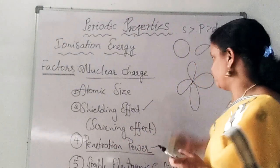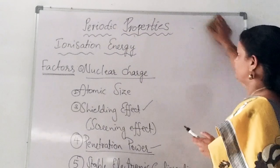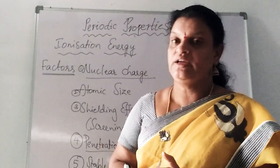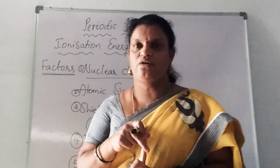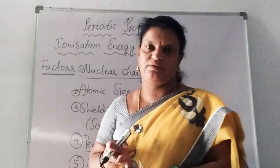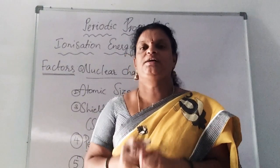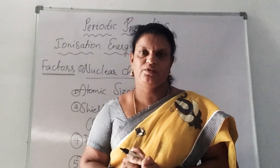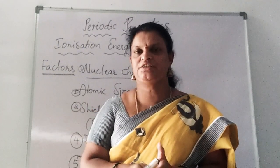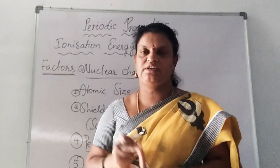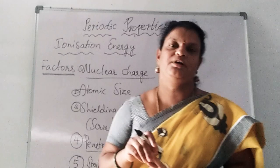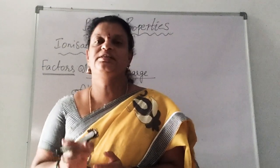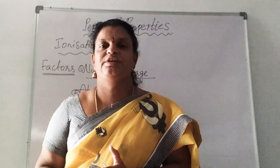The last factor is stable electronic configuration. An element will have stability when it has octet configuration (nearest inert gas configuration), or at least half-filled electronic configuration. Either fully filled, half-filled, or nearest inert gas configuration gives stability. Near helium, elements may have a duplet configuration, which is why I say 'nearest inert gas configuration.' If they have this type of configuration, they are more stable.